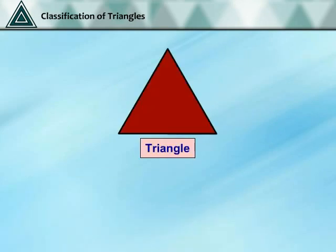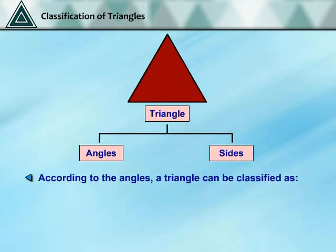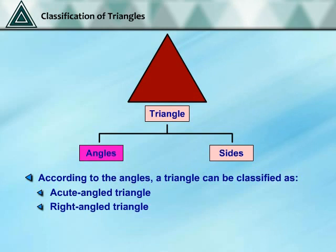Triangles can be classified according to their properties of angles and sides. According to the angles, a triangle can be classified as an Acute Angle Triangle, a Right Angle Triangle, or an Obtuse Angle Triangle.